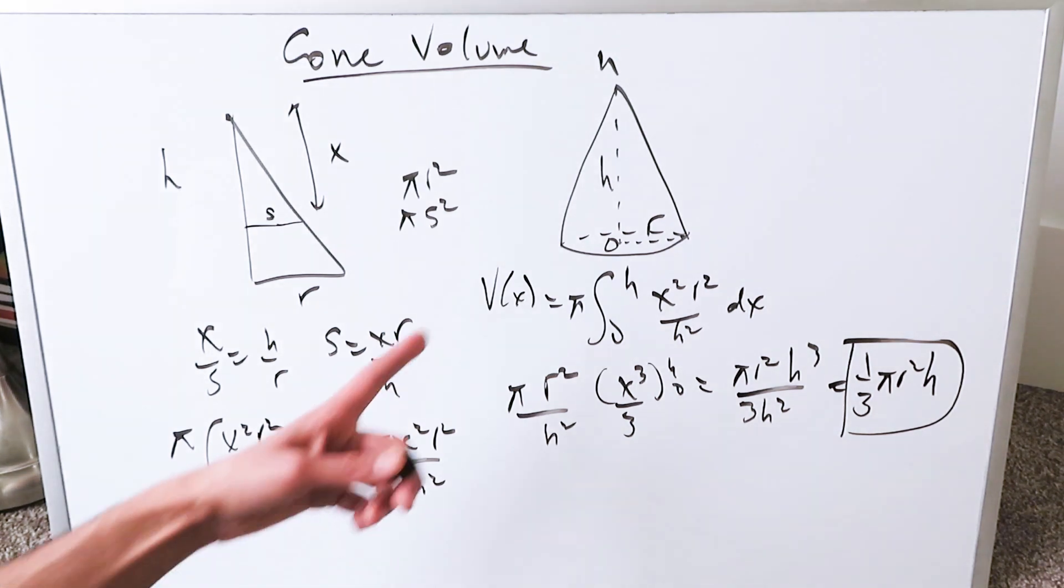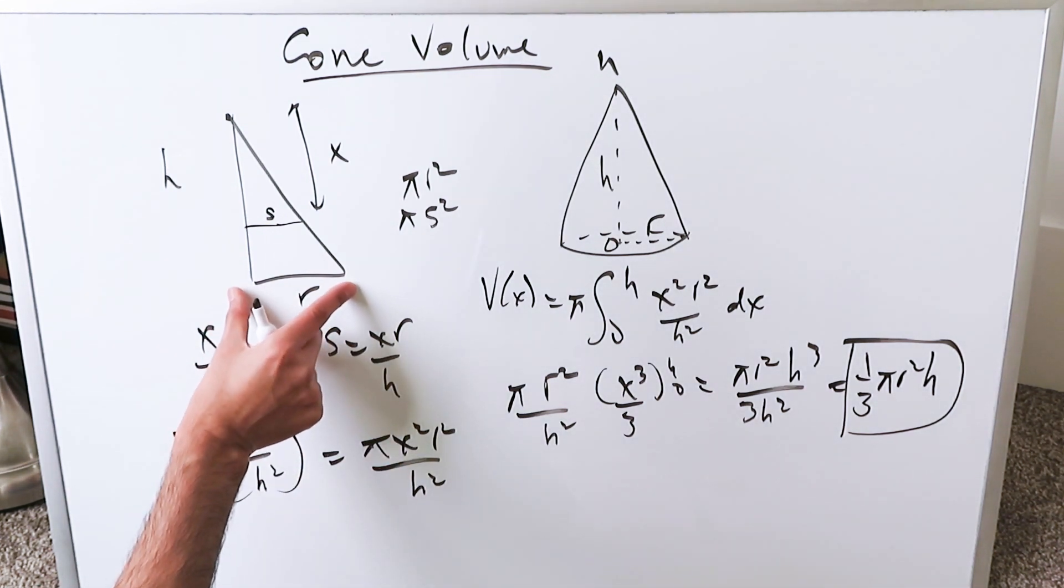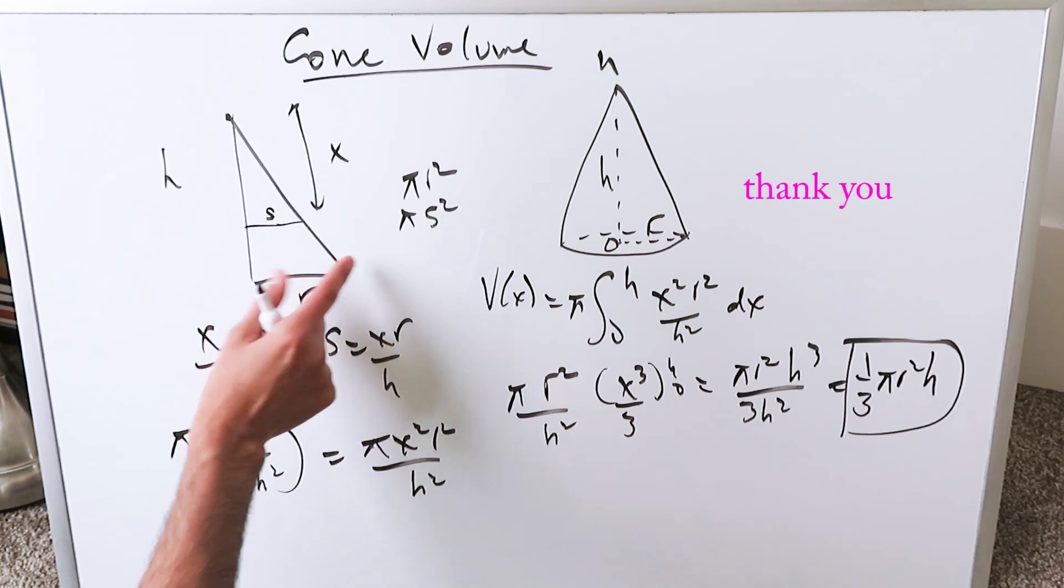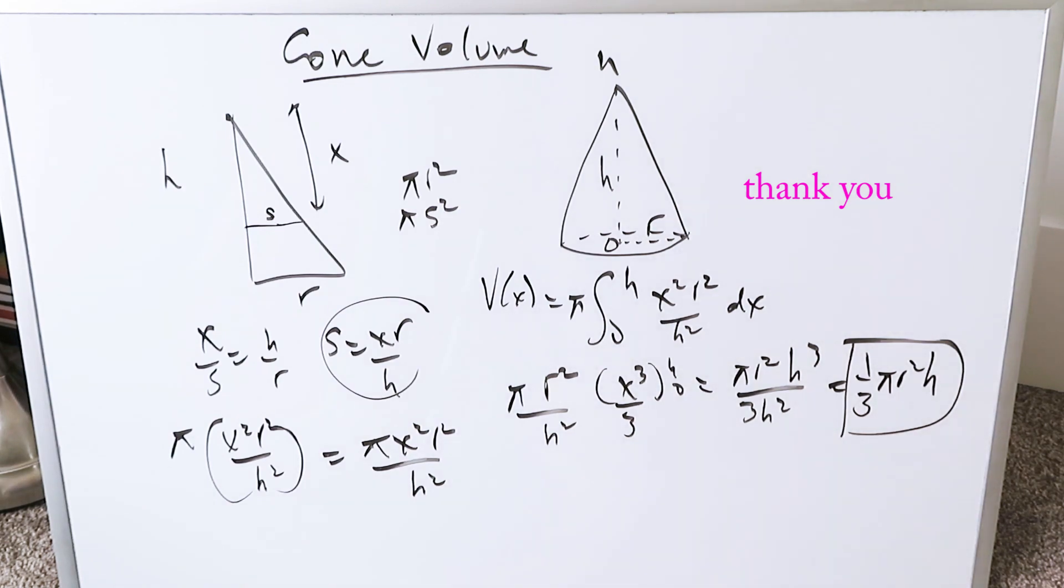This is the volume formula of a cone, and there was no rotation involved, no function, no line, none of that. Easy, simple geometric procedure which relies on calculus to complete it, essentially integrating an area of a slice represented by means of this ratio from a lower limit to an upper limit. Thank you for watching.